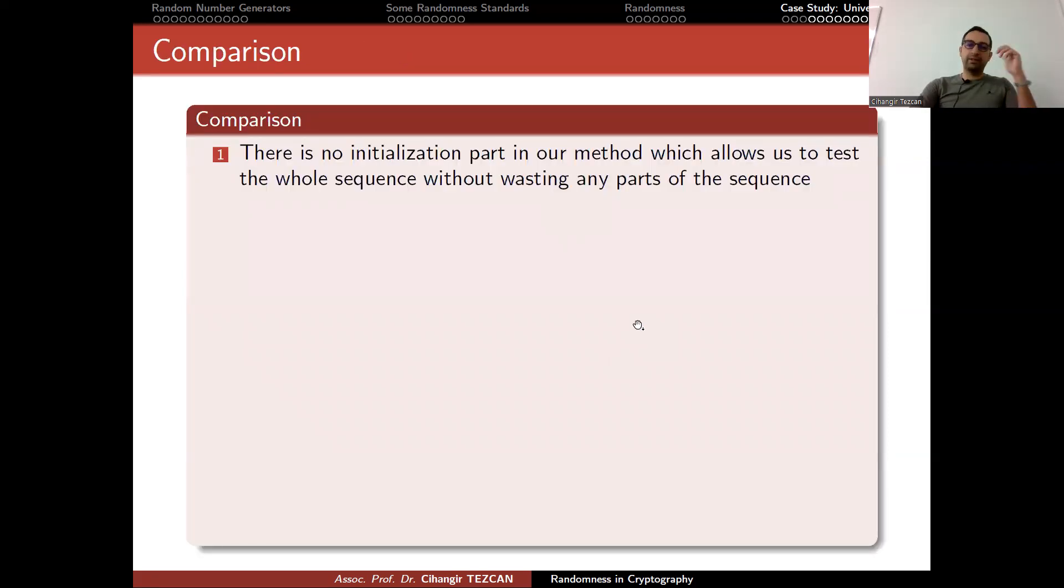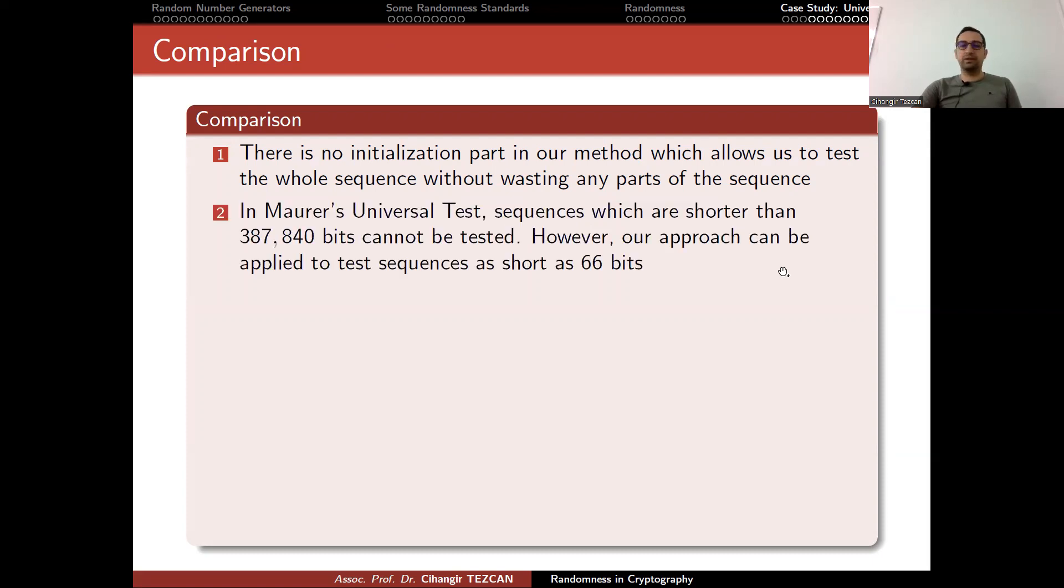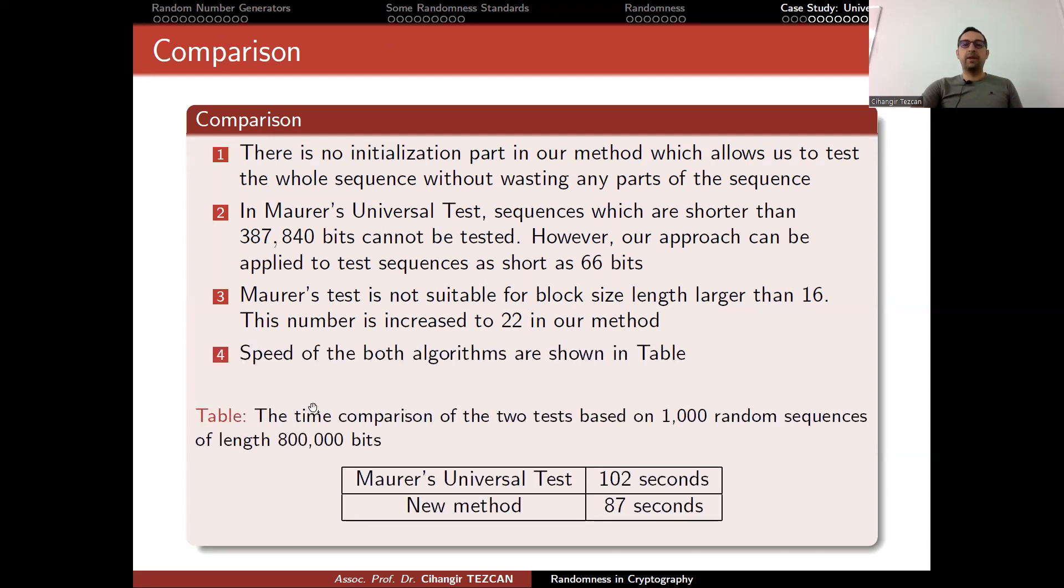For comparison, you can see that we modified the test. There is no initialization part in our method, which allows us to test the whole sequence without wasting any parts of the sequence. In Maurer's universal test, sequences which are shorter than this number, which is more than 300,000 bits, cannot be tested. However, our approach can be applied to test sequences as short as 66 bits. Maurer's test is not suitable for block size length larger than 16 bits. This number is increased to 22 in our method. We also measured the running time and observed that our method obtains the results faster. This way you can propose a new statistical test.